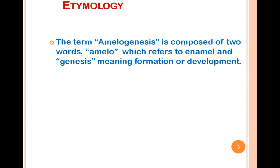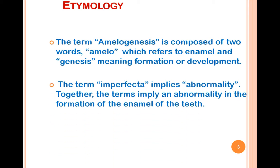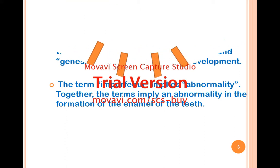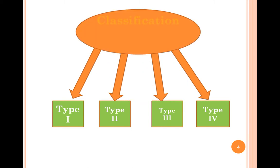Coming to etymology, the term Amelogenesis is composed of two words: 'amelo,' which refers to enamel, and 'genesis,' meaning formation or development. The term 'imperfecta' implies the abnormalities together, indicating an abnormality in the formation of the enamel of teeth.